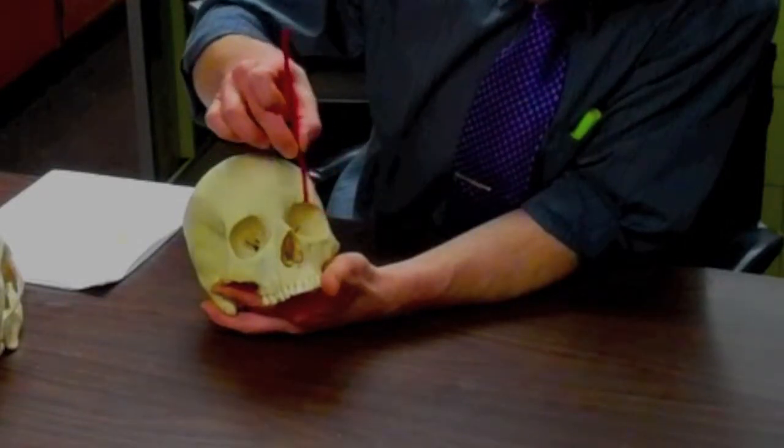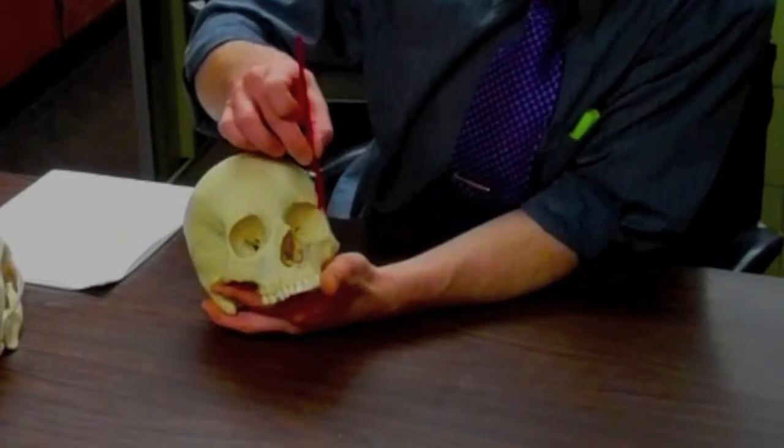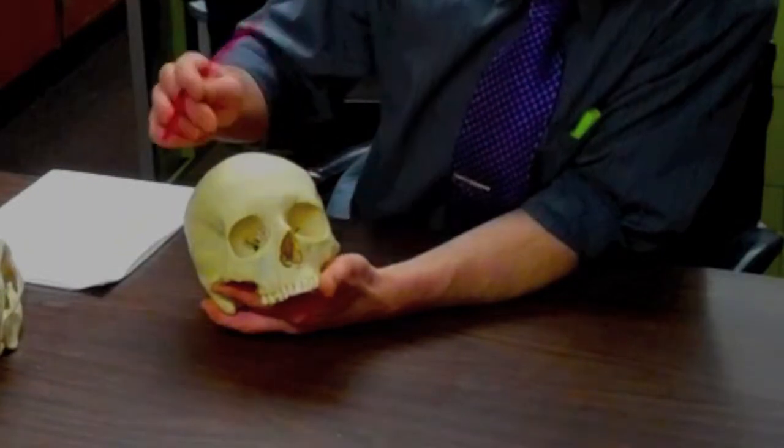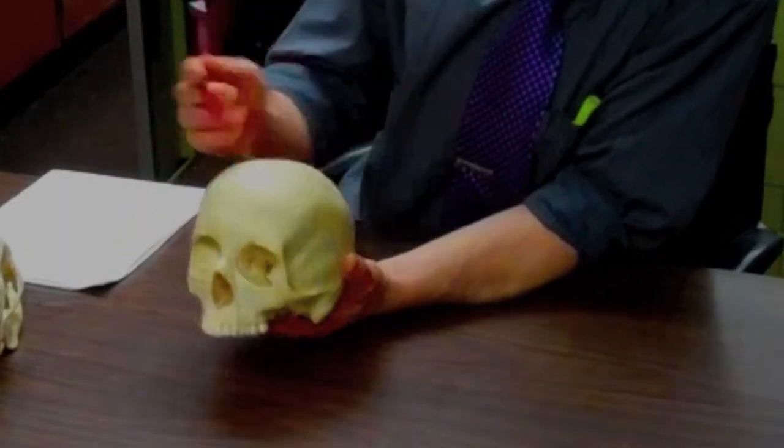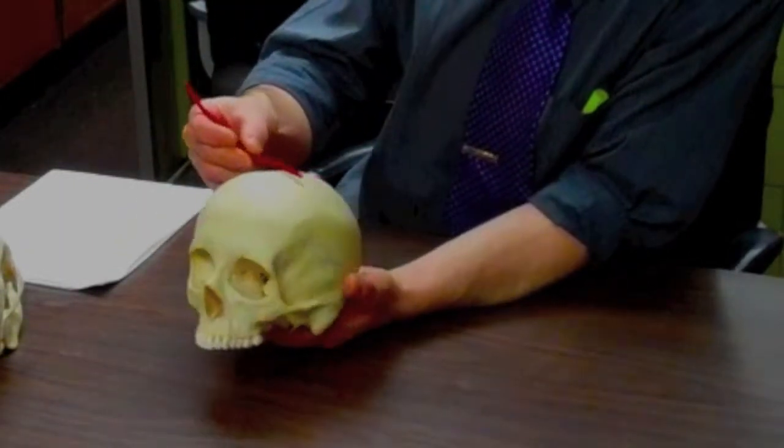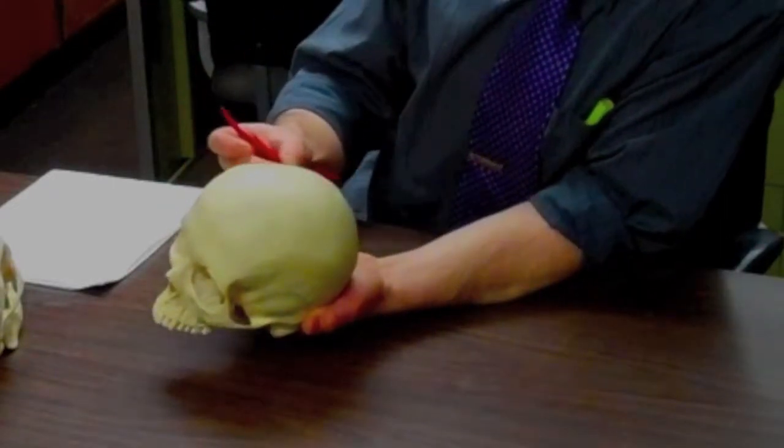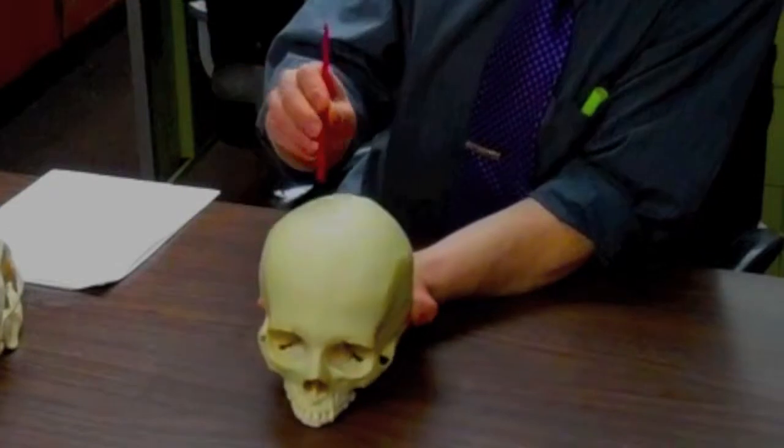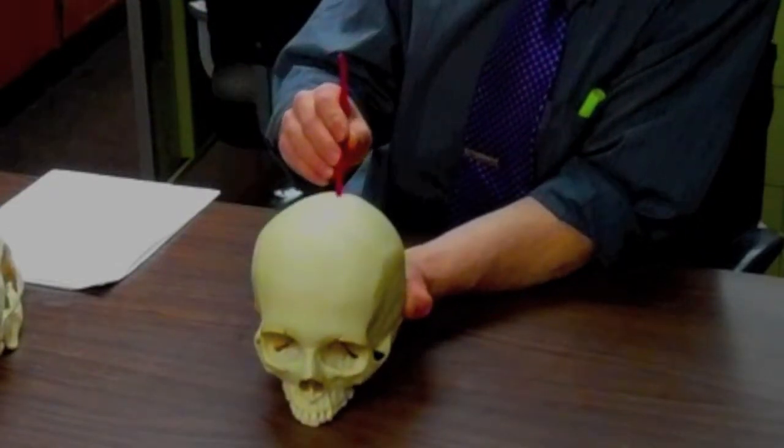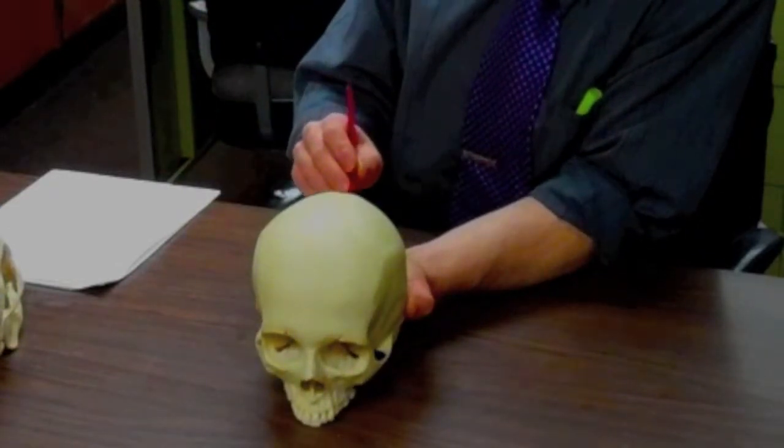This here we call the orbit of the eye, the frontal bone is part of it. When we move more posterior, we have two parietal bones on either side of the skull. They are joined by a sagittal suture in the midline of our head.